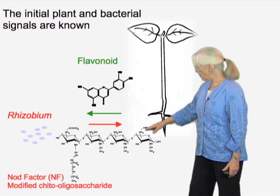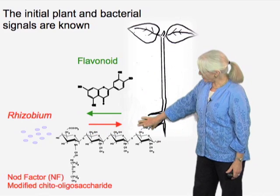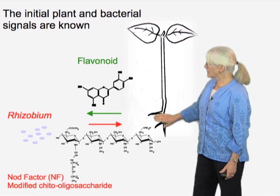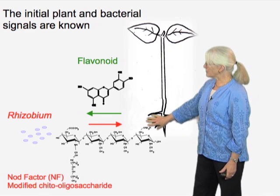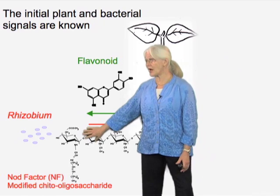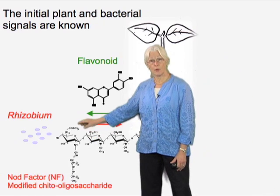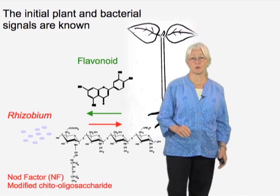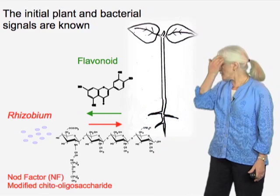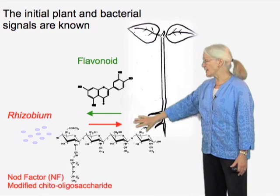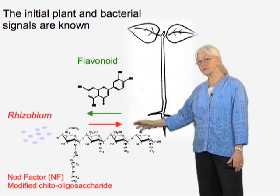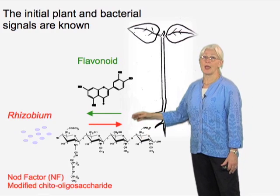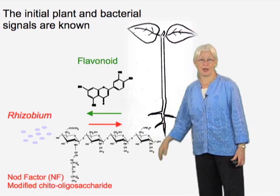Those enzymes synthesize a second signal, the so-called nod factor, sometimes abbreviated as NF. This is a modified chitin fragment with four residues of N-acetylglucosamine, modified at the reducing end with a sulfate, and at the non-reducing end with both an acetyl and an N-acyl group. I'll be talking about the differences between the plant response to chitin and to a true nod factor.